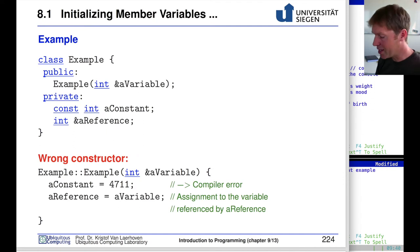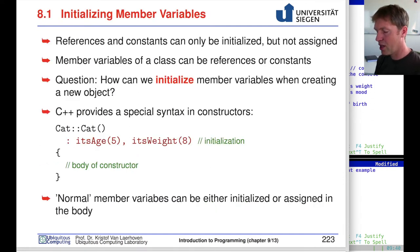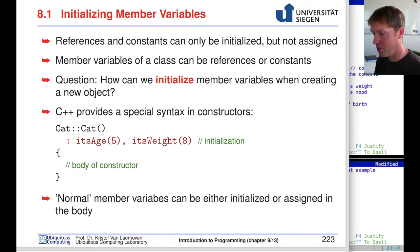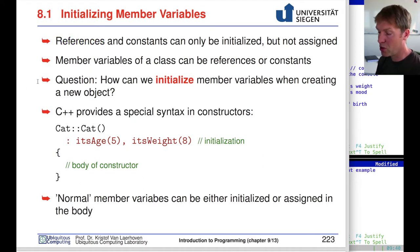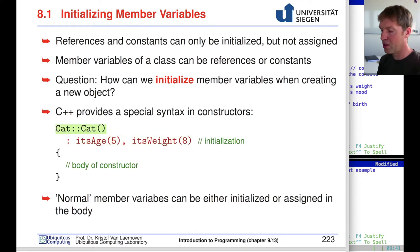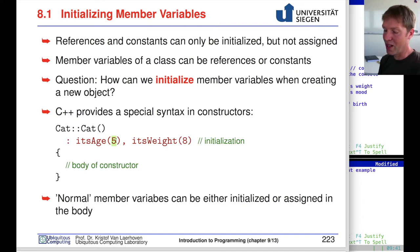So when we initialize member variables, there are certain things we can't assign — we can only initialize. Constants are one such case. As we saw in the last chapter, references are another: a reference can be initialized but you can't assign anything to it afterwards. The way to initialize these is just after the constructor definition, specifying the data member and the value. This is initialization, not assignment; assignment would happen in the body of the constructor.